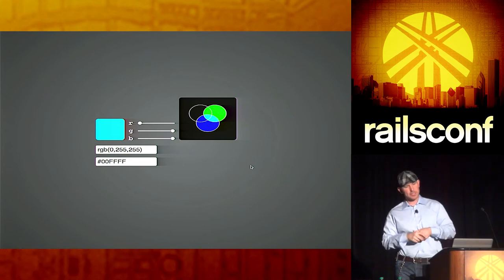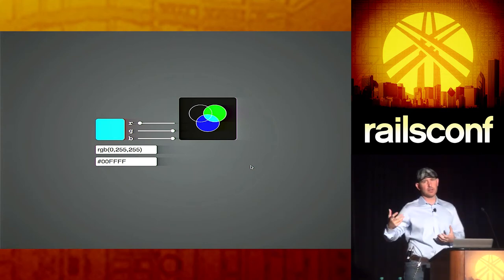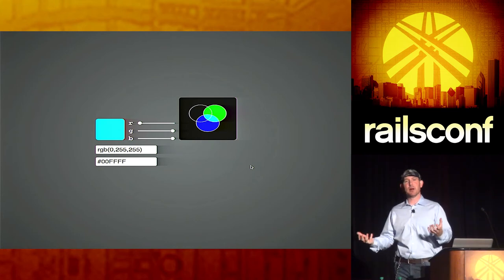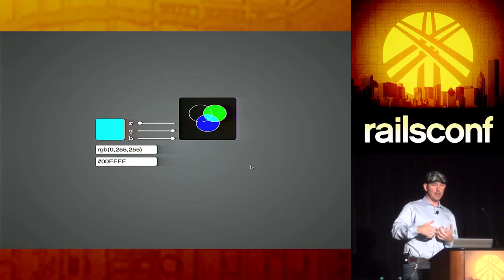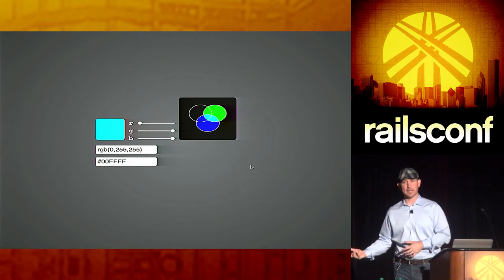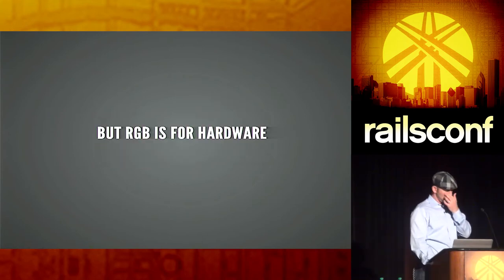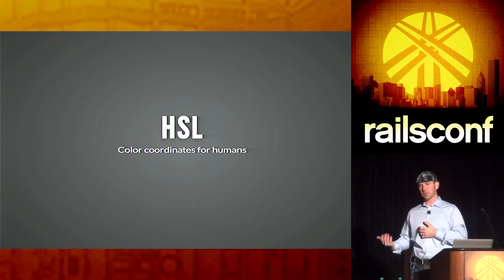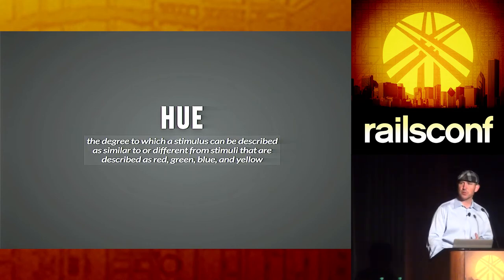RGB is great if you happen to be a pixel, but it can be difficult for us humans to understand. The reason we use RGB coordinates is because it's easy for a monitor to take three values, add them together, and emit the right frequency of light — but that's not how we as humans actually perceive color. RGB is kind of like the assembly language of color — it's what the machine understands. So probably the most popular other coordinate system for describing color is called HSL — hue, saturation, and lightness.